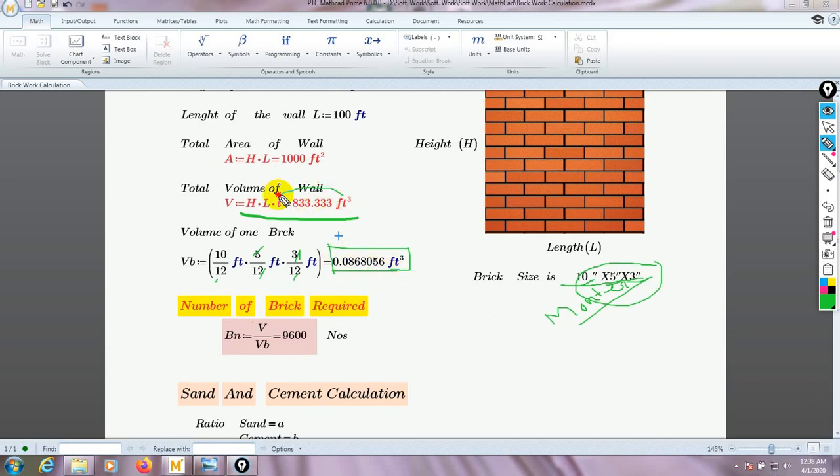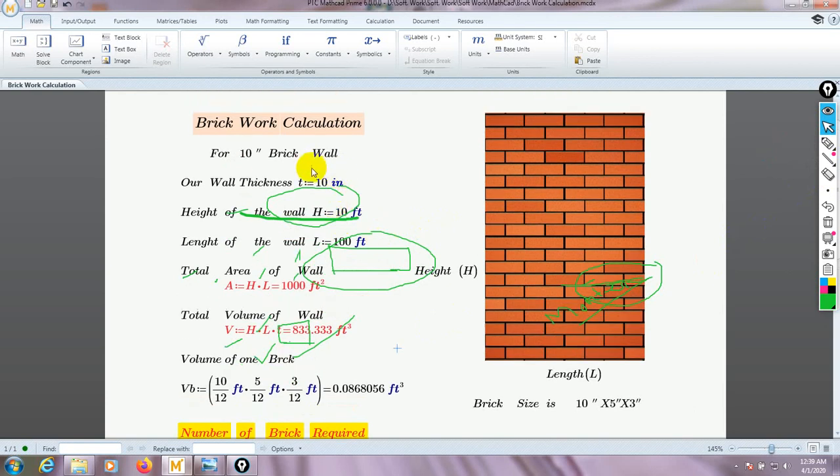If we divide our total volume by one brick volume, then we'll find our brick requirement. Total volume V divided by Vb (volume of one brick), we have found our requirement of brick is 9,600 numbers. So we need 9,600 bricks for a 10-inch wall of 10 feet height and 100 feet long.